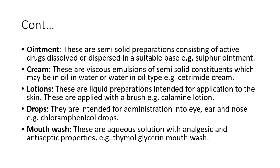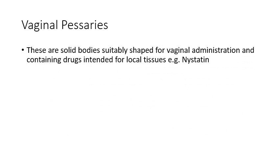Next are vaginal pessaries. These are solid bodies accordingly shaped for vaginal administration, and they contain drugs intended for local tissue effects. For example, nystatin is used for vaginitis, so that it does not produce any effect on the systemic circulation.